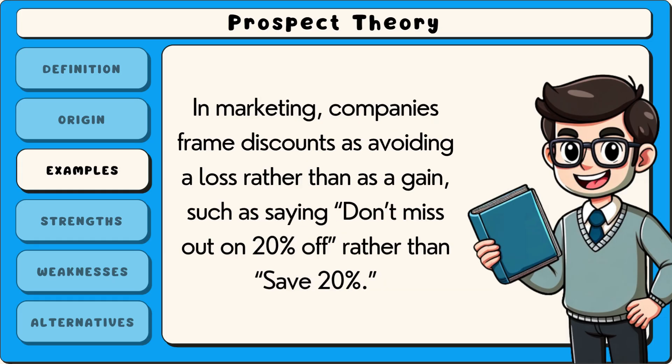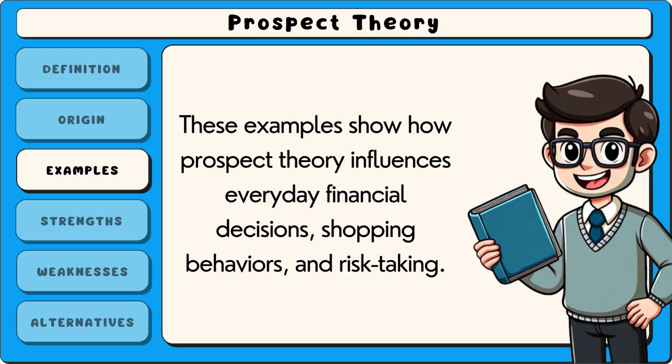In marketing, companies frame discounts as avoiding a loss rather than as a gain, such as saying 'don't miss out on 20% off' rather than 'save 20%'. These examples show how prospect theory influences everyday financial decisions, shopping behaviours and risk-taking.